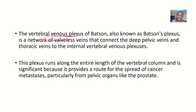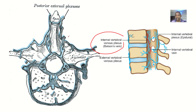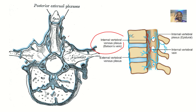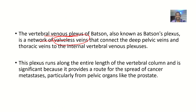The veins are valveless. What is the use of a valve in a vein? A valve in a vein prevents blood from flowing backward. Since these veins are valveless, blood flows back and forth. So one reason infections spread easily is that the veins are highly interconnected, and second, they are valveless — making it easier for infections like prostatic malignancy to spread.